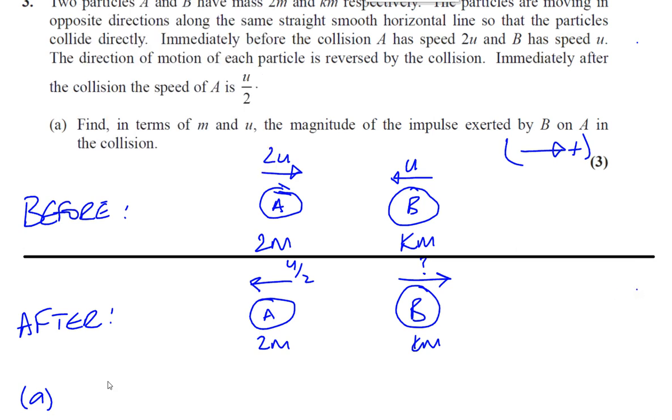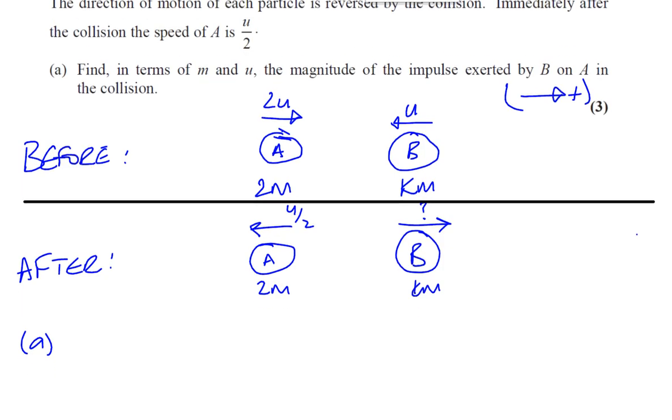So the change in momentum, for in terms of m and u. Well, for B, we can't find the change of momentum because we don't know what its speed is after the collision. But for A, we can find the change in momentum because we know the speed before and the speed after. We know the mass of A. So the impulse is basically the mass times the final velocity minus the mass times the initial velocity. Which is like the mass times the change in velocity.